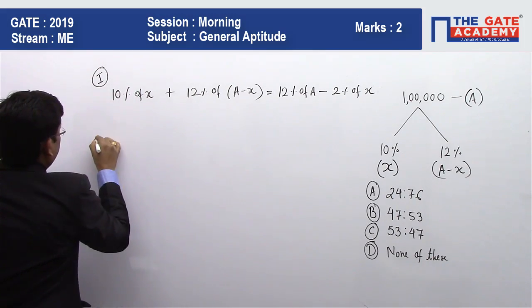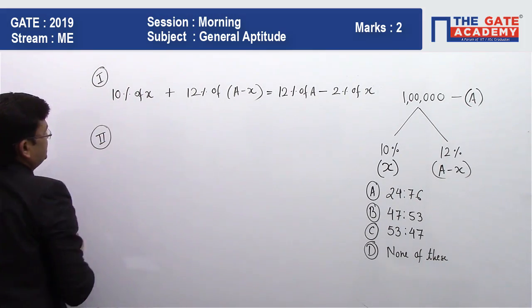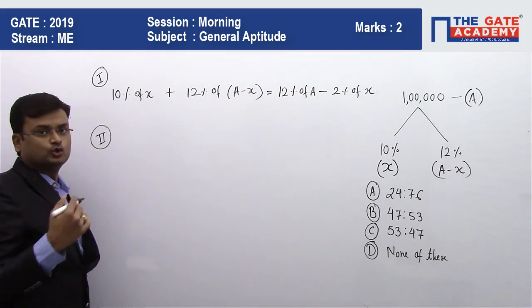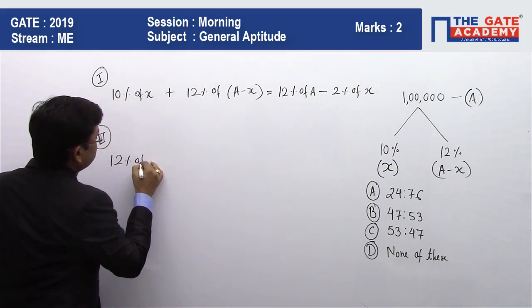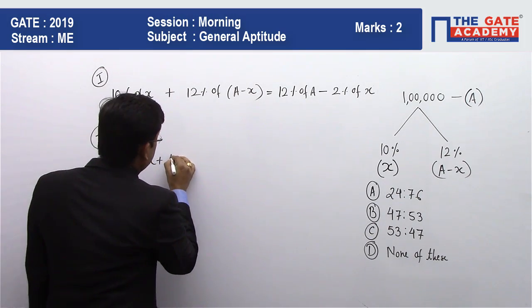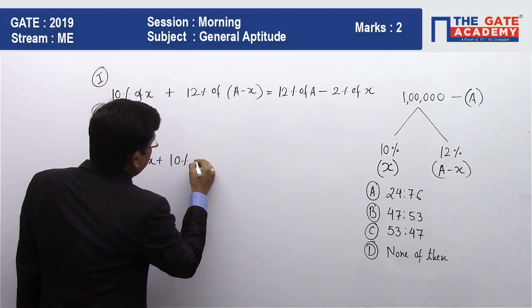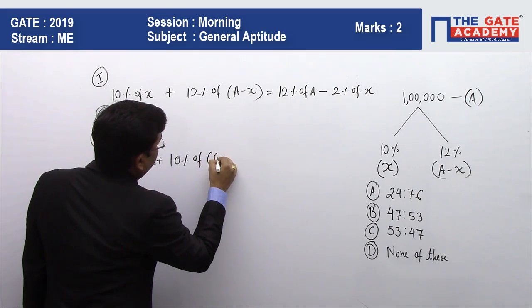Case 2: profit interchange. The profit will get interchanged in case 2. So 12% of X plus 10% of A minus X.